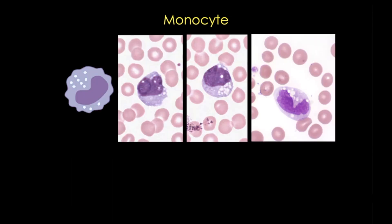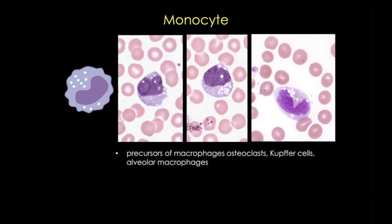Monocytes circulate in blood for several hours, enter tissues, and mature as different kinds of macrophages. Circulating monocytes have large unilobed nuclei that are usually distinctly indented or C-shaped — I always think of a dented kidney bean or jelly bean shape. The chromatin is much less condensed than in lymphocytes, so it typically stains lighter or less dark blue. The cytoplasm is basophilic but usually a pale, bluish, almost purple-gray.